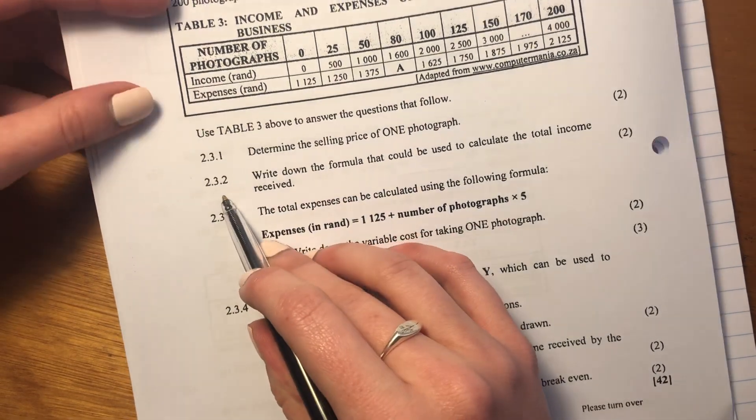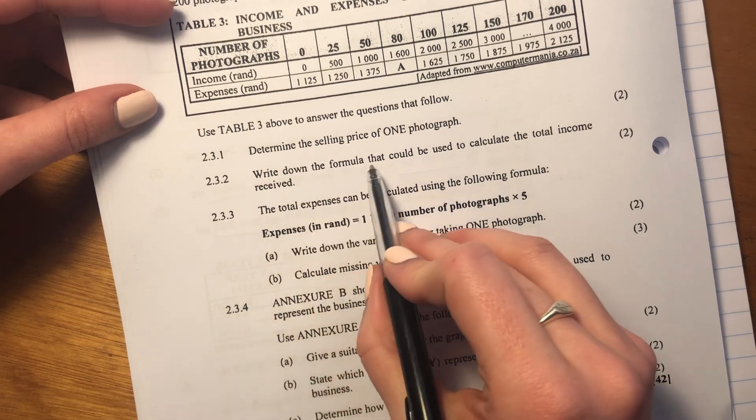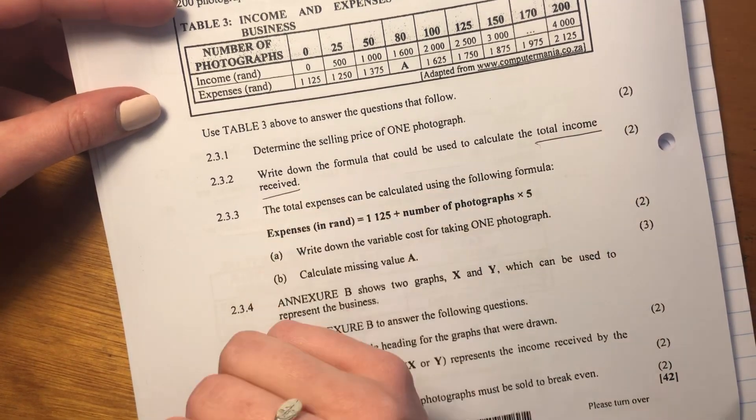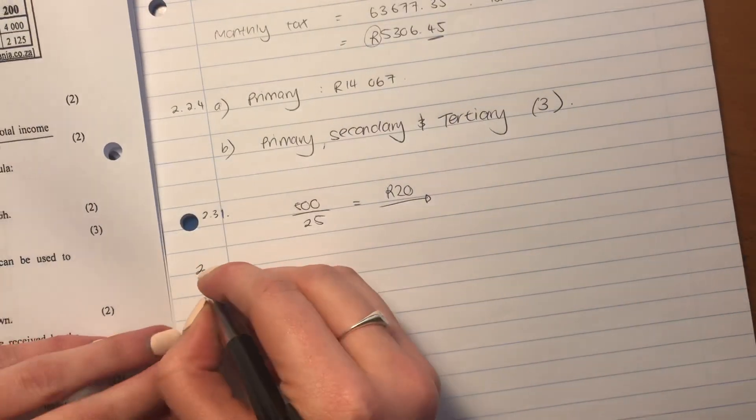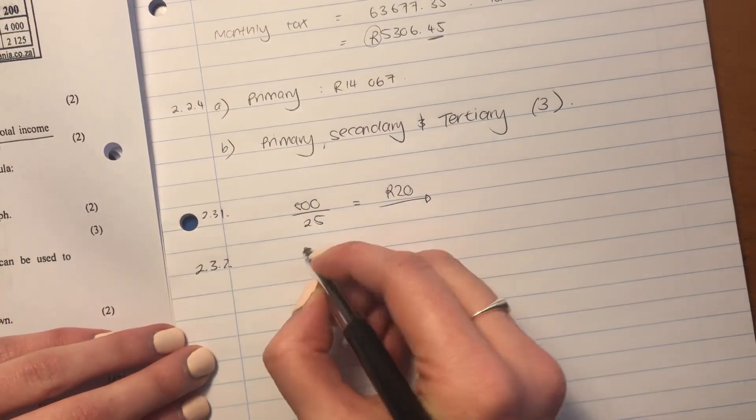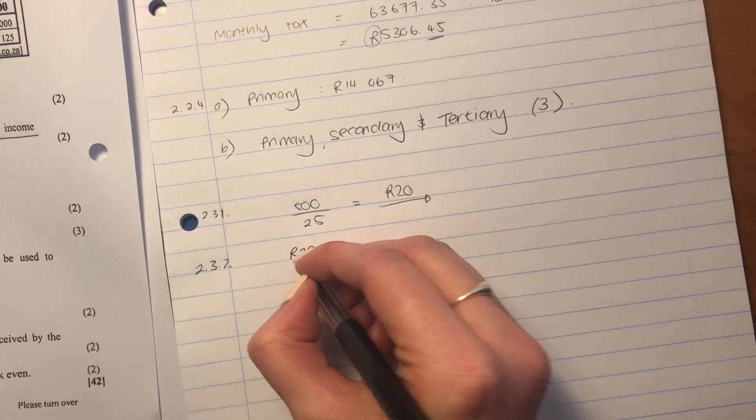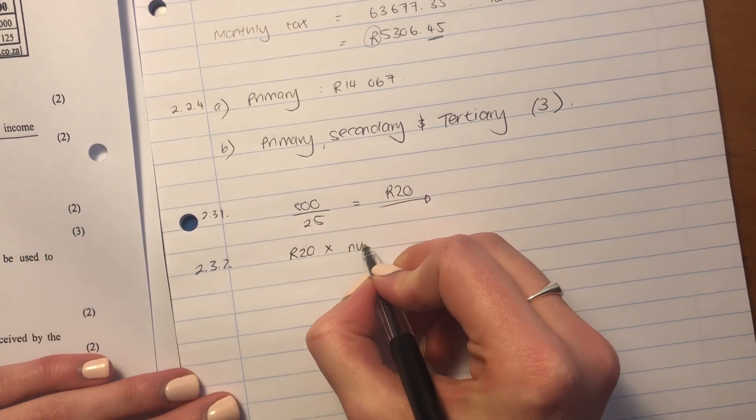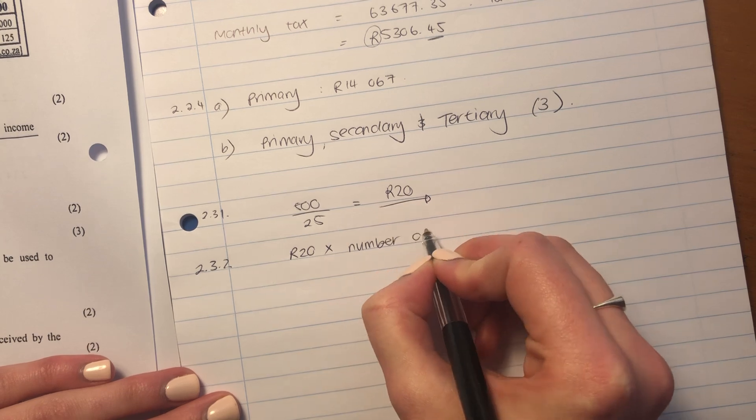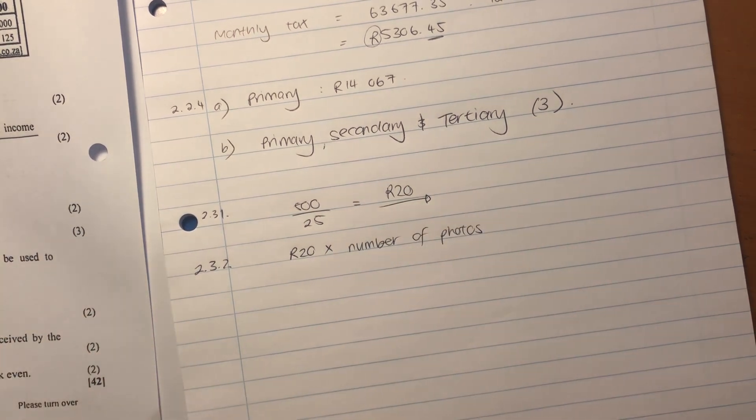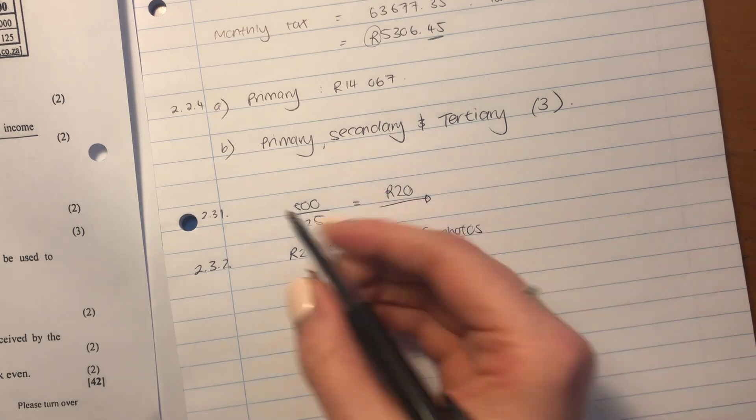Let's now go to 2.3.2. It says write down the formula that could be used to calculate the total income received. So the total income received, we can actually use our previous answer. Would be 20 rand, times by the number of photographs. Because if you think about it, that is the income.